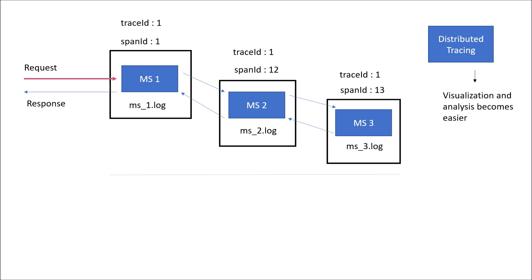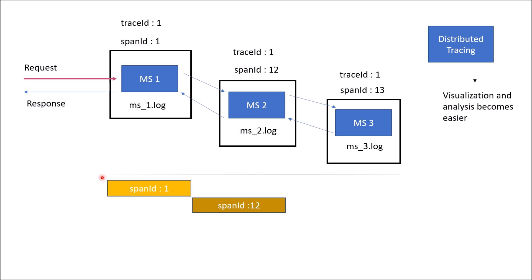For this request, a line represents the whole request and response timeline. When the request heads to microservice1, span ID 1 is created, giving you a particular time interval. Span ID is essentially the API endpoint being hit and gives you the corresponding request and response time. Similarly for microservice2 we have span ID 12, and for microservice3 span ID 13. This is the kind of visualization available for operations teams. We will look at a practical example screenshot of Spring Sleuth and Zipkin at a later point in this video.